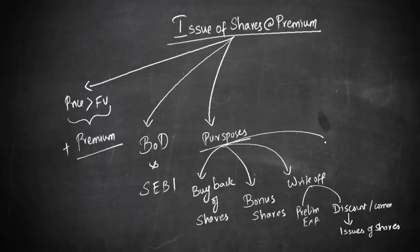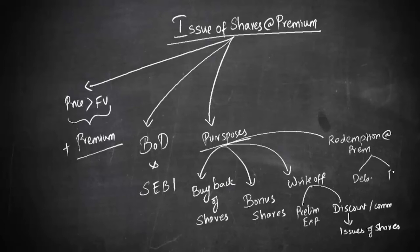Similarly, when there is a redemption of preference shares or debentures, and at the time of redemption they are redeemed at premium, that is if redemption is going to happen at premium as far as debentures or preference shares are concerned, then that redemption premium can be adjusted from share premium.